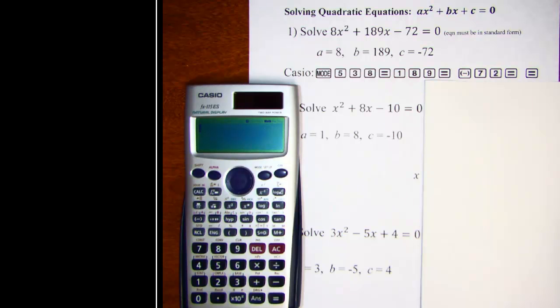Alright, in this video we will take a look at solving quadratic equations using the Casio FX-115 ES. Okay, first of all you want to make sure that your quadratic equation is in standard form and that's written here ax² plus bx plus c equals zero. And the reason you want it to be in standard form is because we are going to enter A, B, and C into the calculator and so the equation needs to be in the correct form first.